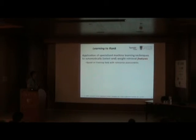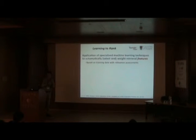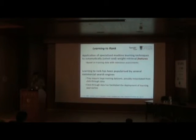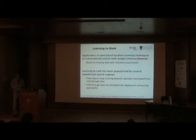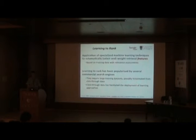Learning to rank is an application of specialized machine learning to automatically select and weight retrieval features. We've got a test collection with queries and labelled documents. We use that to learn which features are appropriate and how much they should be weighted. It's been popularized by several commercial search engines, driven significantly by people at Microsoft. The Tie-Yan Liu reference in Foundations and Trends in Information Retrieval, around 2009, is seminal — very math-heavy but worth reading. We use large training datasets, possibly instantiated using records of user behavior, to learn which features are appropriate.